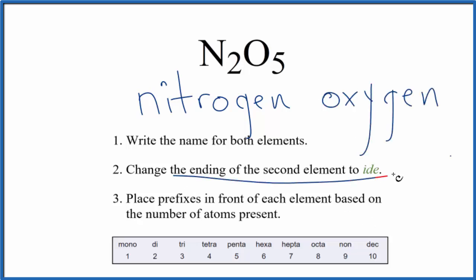Then we change the ending on the second element to ide. So we cross this out and write ide. So at this point, we have the name nitrogen oxide for N2O5.